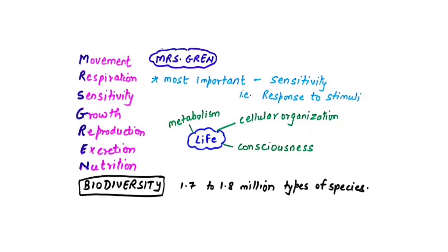Life has three important characteristics. First is metabolism, which is a combination of catabolism and anabolism. Second is cellular organization — every living organism on earth is made up of cells. Viruses are not included in the concept of life because they are acellular structures. Third is consciousness — awareness about yourself and your surroundings — which is basically life.